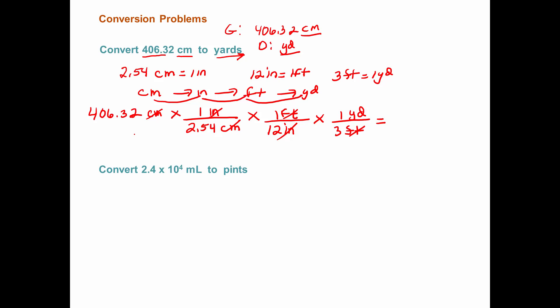Let me put this into my calculator. 406.32 divided by 2.54, divide by 12, divide by 3. Whoops, that wasn't a 3. I have to redo this. Sorry guys. 406.32 divided by 2.54 divided by 12 divided by 3. I get 4.44. The conversion units don't affect my significant figures. So I can have five significant figures here. So it would be 4.4436 yards.